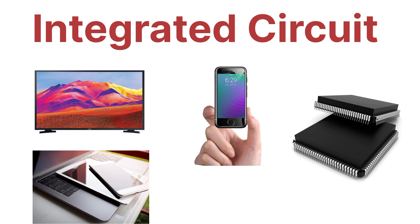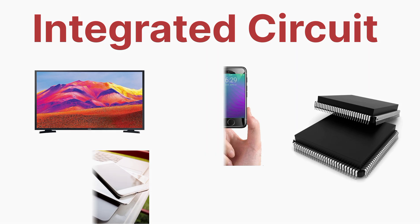Overall, an integrated circuit is a collection of interconnected semiconductor electronic components. An IC is a semiconductor which can act as a resistor, capacitor, diode, and also a transistor. That's all the concept of IC — see you in the next video, thanks for watching.